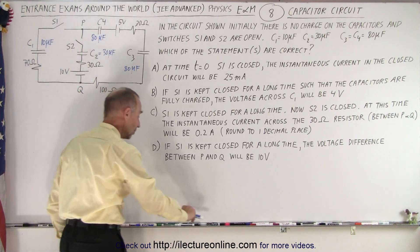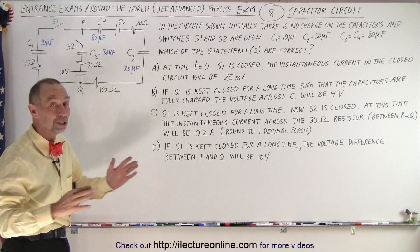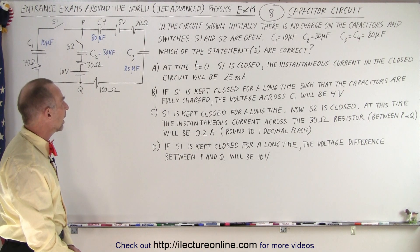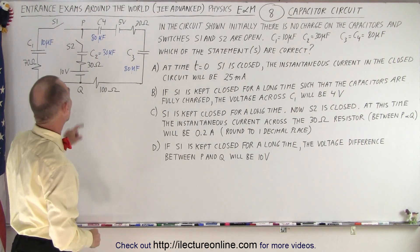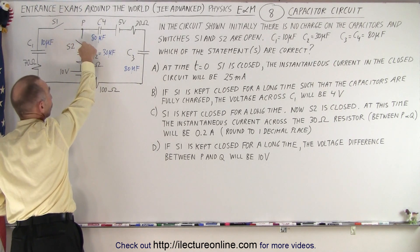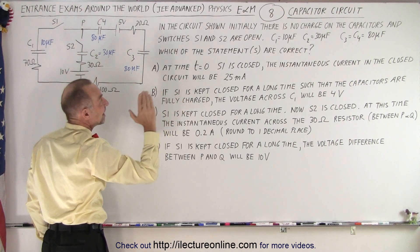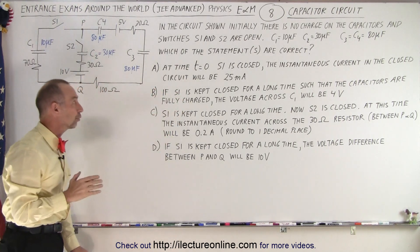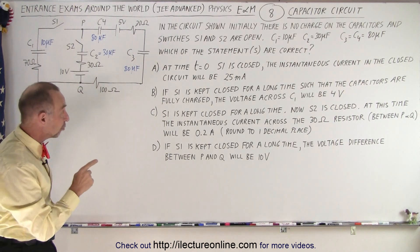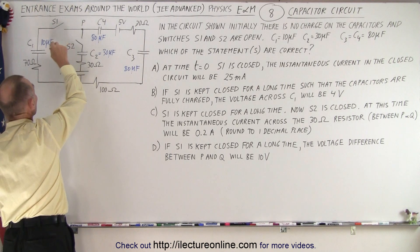Let's go ahead and read the four statements and determine which could be correct. At time t equals zero, we close switch one. So switch one closes, switch two stays open. And so now they're asking us for the instantaneous current in the closed circuit, will it be 25 milliamps?